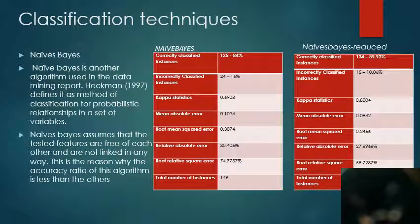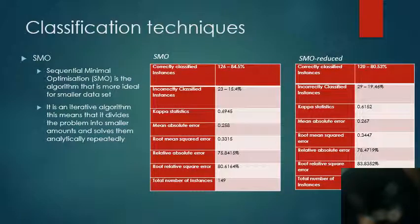Naive Bayes has increased from 84% to 89%. That's an increase of almost 5%. And the SMO, sequential minimum optimization, has decreased from 84% to 80%.